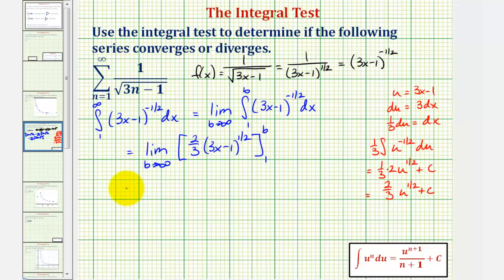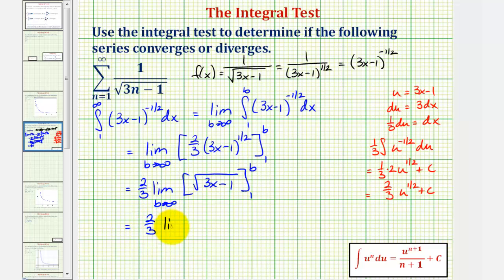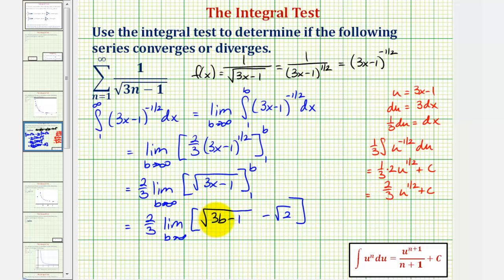Let's factor out the two-thirds and write this as two-thirds times the limit as b approaches infinity of the square root of the quantity three x minus one, evaluated from one to b. So we have two-thirds times the limit as b approaches infinity of the square root of three b minus one minus the square root of two. Now as b approaches infinity, since three b minus one increases without bound, the square root of three b minus one also approaches positive infinity. Therefore this limit approaches positive infinity, and so does two-thirds times this limit.